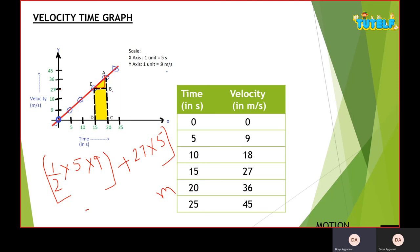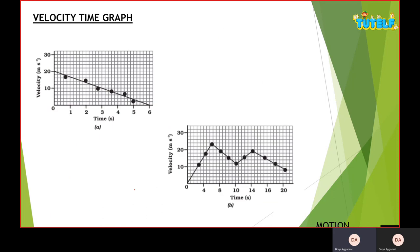Now I'll find the slope: slope equals AB divided by BE, which is 9 divided by 5, giving 1.8. The units here would be meters per second squared, which is the unit of acceleration. So the slope of a velocity-time graph gives acceleration, and the area under the graph gives displacement.